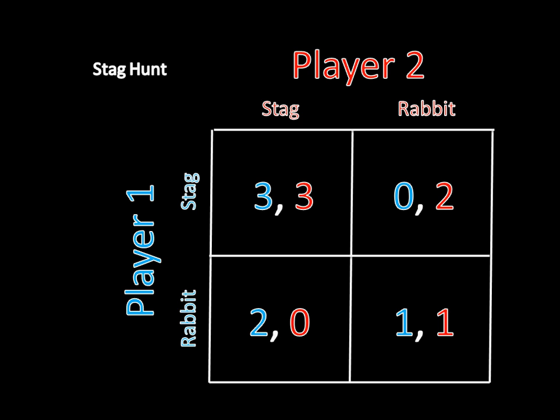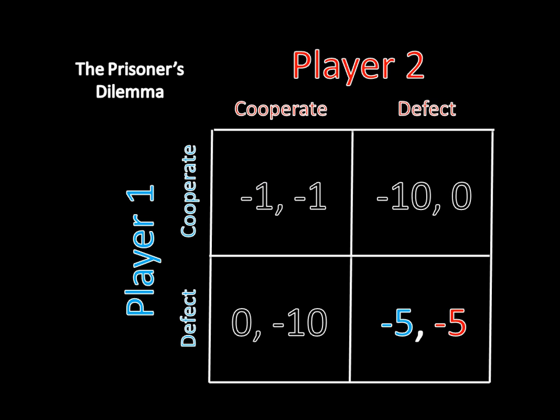If you recall back to the video on the stag hunt, we developed a method to find pure strategy Nash Equilibria — Equilibria where neither player randomizes among his strategies. In the stag hunt, there are two pure strategy Nash Equilibria: stag-stag and rabbit-rabbit. That is, both players always played stag, or both players always played rabbit — they weren't choosing to play stag half the time and rabbit the other half. And going back to the prisoner's dilemma, the pure strategy Nash Equilibrium was for both players to defect — again, not randomly choosing to cooperate some of the time and defect the rest.